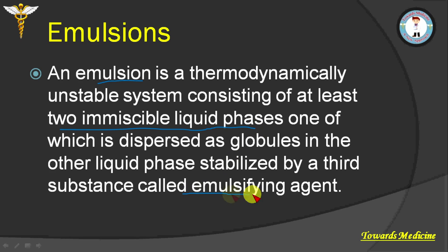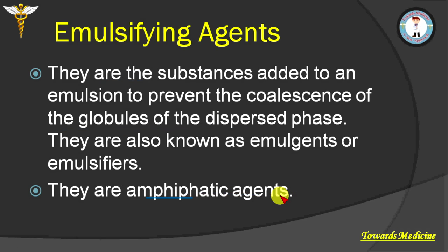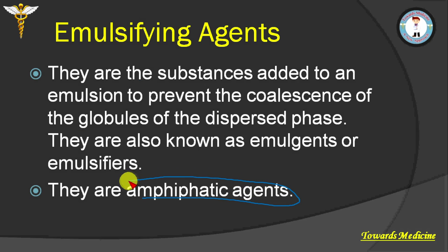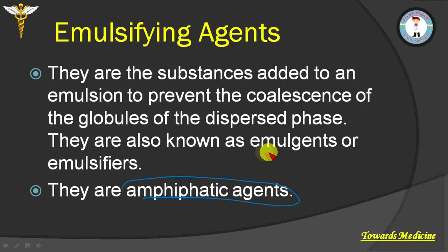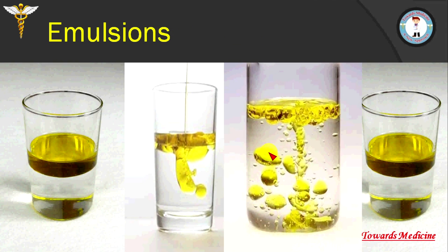Emulsion is stabilized by an emulsifying agent. An emulsifying agent is mostly amphipathic in nature and it prevents the collisions of the globules of the dispersed phase. They are also known as emulsifiers or emulgents.